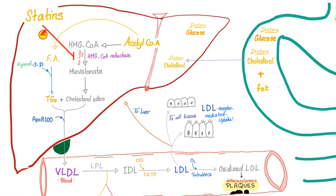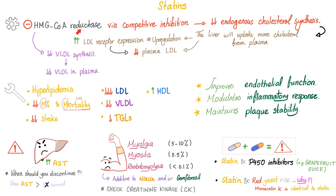How do statins work? Statins inhibit the rate-limiting step — they inhibit the HMG-CoA reductase enzyme. Therefore, cholesterol esters in the liver decrease, VLDL decreases, and LDL decreases. The liver, making less cholesterol, will upregulate its LDL receptor to collect LDL from the blood, lowering plasma LDL even more.